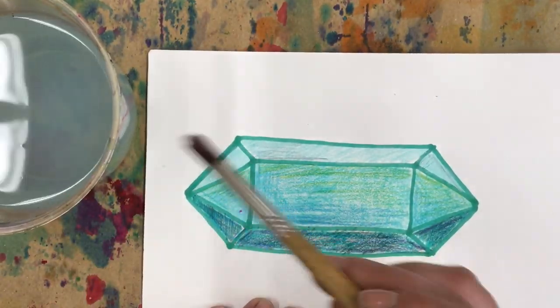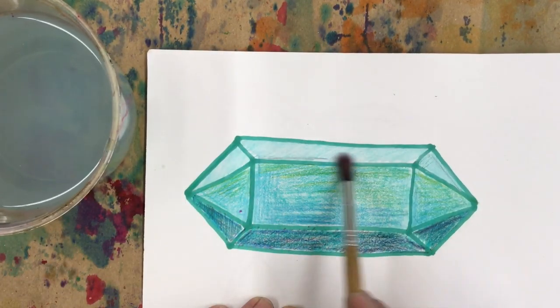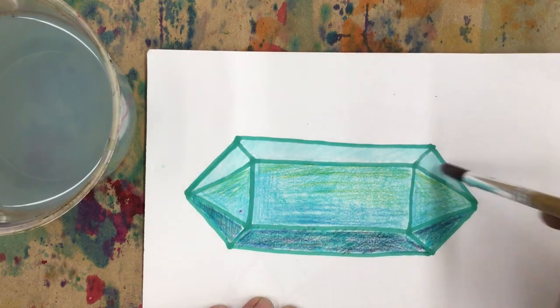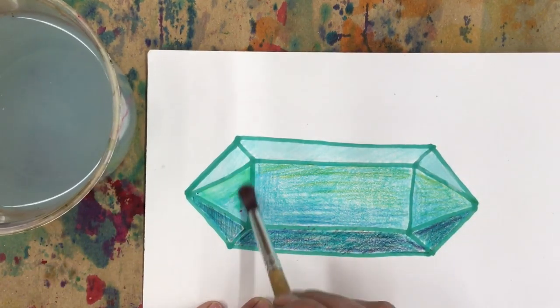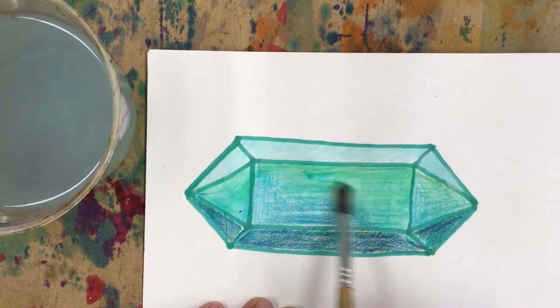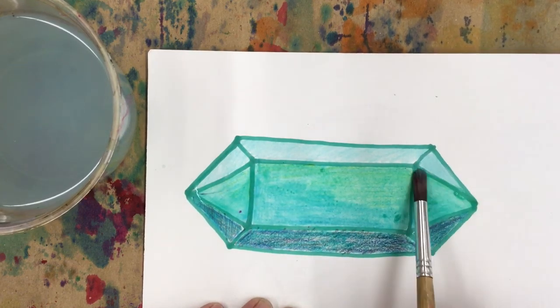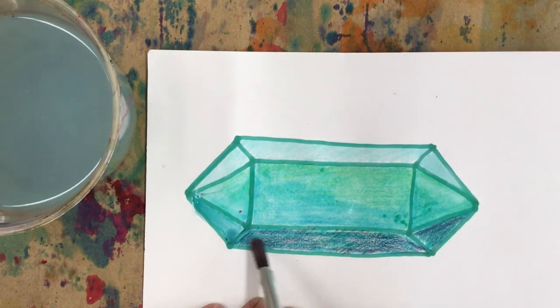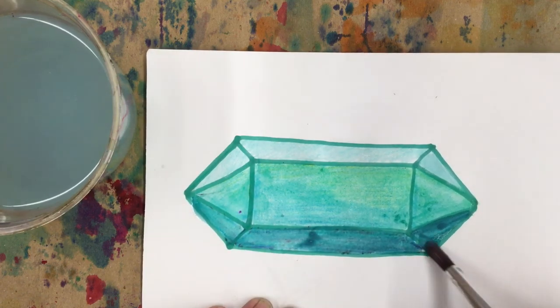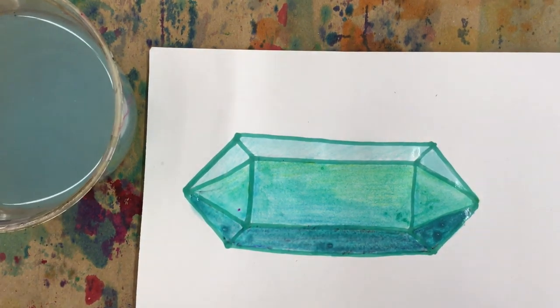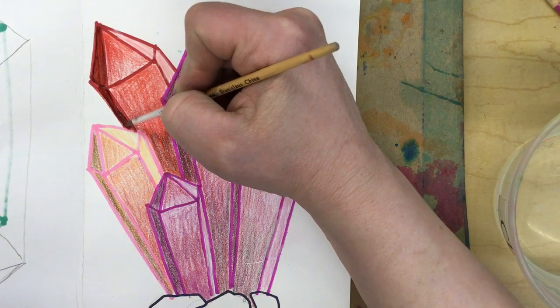Now I happen to use watercolor pencils when I did this. So if you use regular colored pencils or crayons or something like that, you don't need to do this step. But if you happen to have watercolor pencils, then our last step is adding a little bit of water over top to turn the pigment into paint.